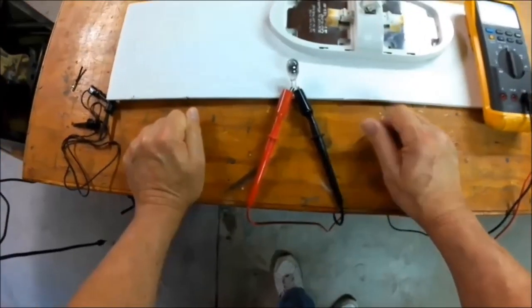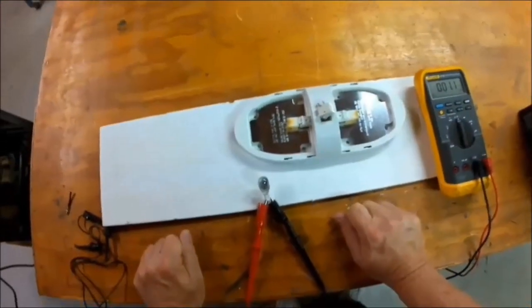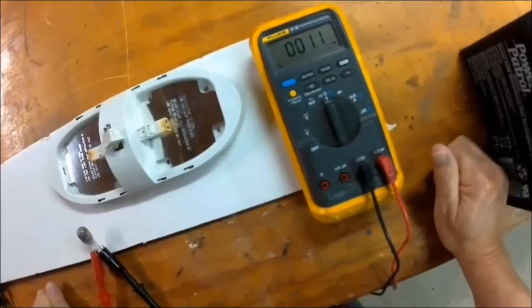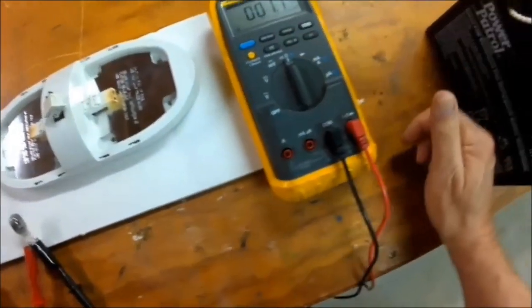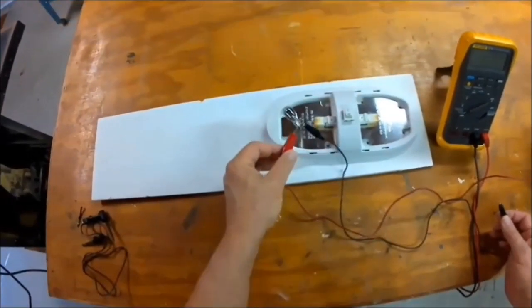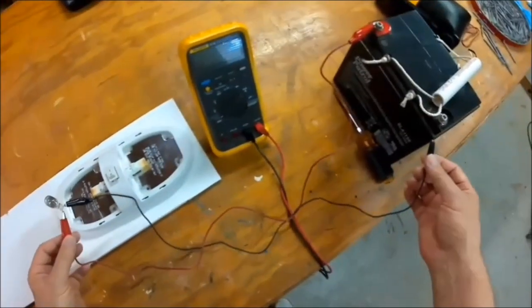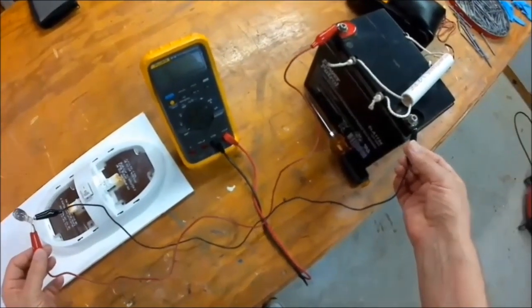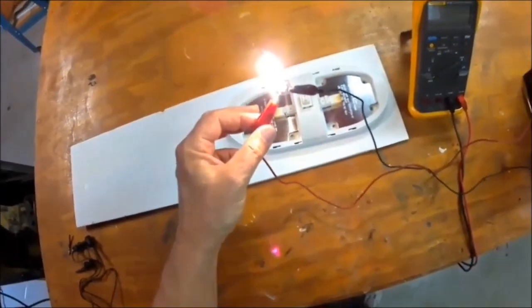First I'm going to test the filament of the light bulb. I have a good filament, good continuity, and I can hook it directly to a 12-volt battery source and the bulb is working.